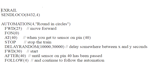The next line tells the loco to go forward at speed step 25, and the following line turns function zero on, which is the light. The AT 40 is the IR sensor - when you get to the sensor on pin 40, it stops, which is the following command. Then there's a DELAY RANDOM for anywhere between 10 and 30 seconds.